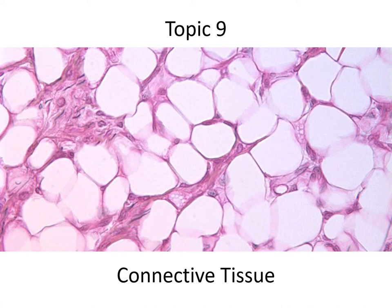We looked at epithelial tissues before. Remember, epithelial tissues are exposed at one surface — exposed to the outside environment or to an internal space of some sort. Now we're going to look at connective tissues. Connective tissues fill in the gaps; they connect different tissues together.